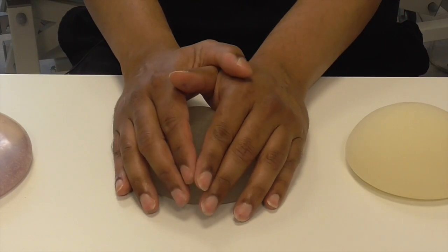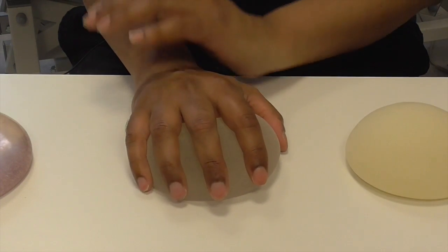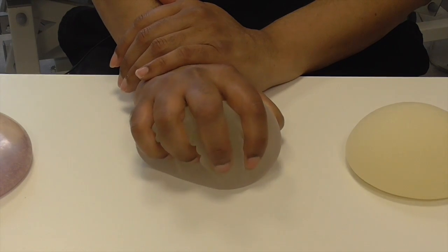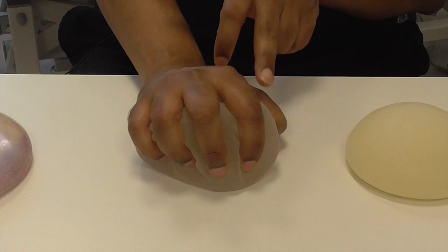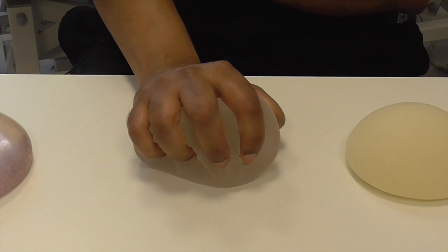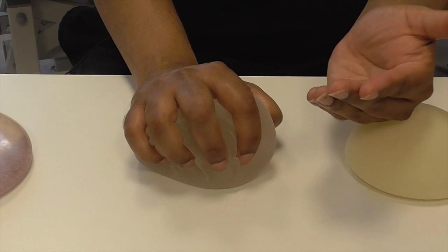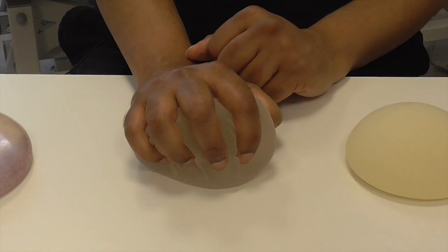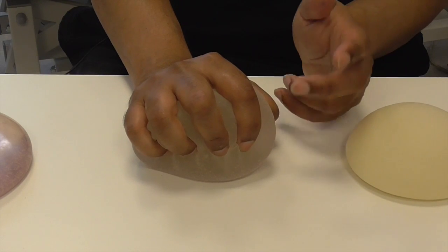But in certain individuals at certain times, you find that the capsule starts to contract much like my hand is doing on the implant. The result is the implant becomes deformed, which can cause the patient a visible or palpable deformity or pain, or in certain extreme instances it can even rupture.